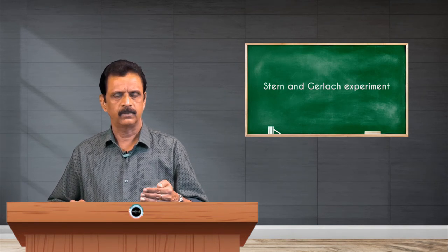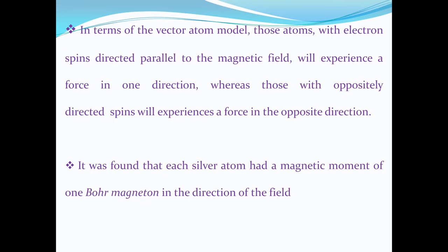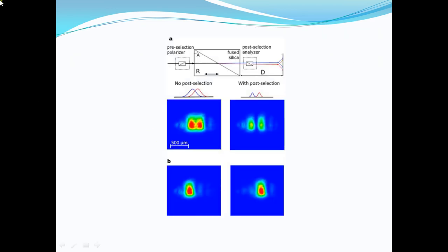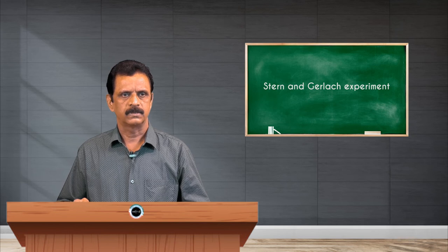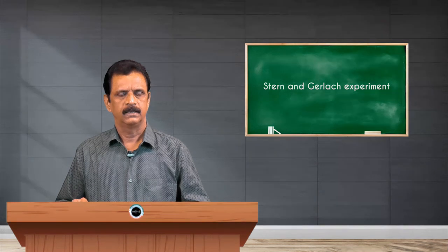When the atomic beam reaches the screen, it produces an image. In terms of the vector atom model, those atoms with electron spins directed parallel to the magnetic field experience a force in one direction, while those with oppositely directed spins experience a force in the opposite direction. It was found that each silver atom had a magnetic moment of one Bohr magneton. A second photograph with a well-resolving spectrometer also shows two distinct images — one without the magnetic field, and one with the non-uniform magnetic field applied.